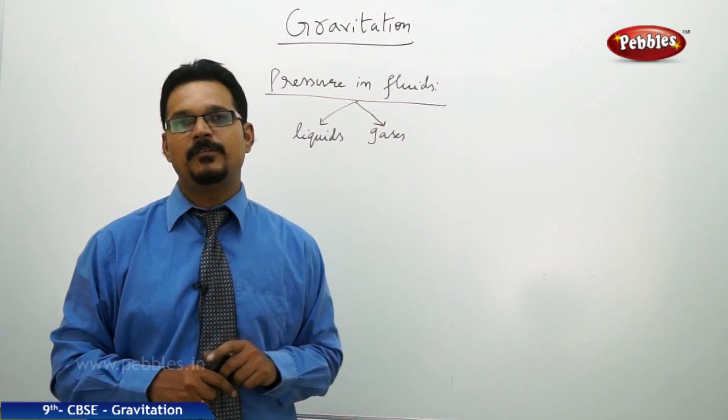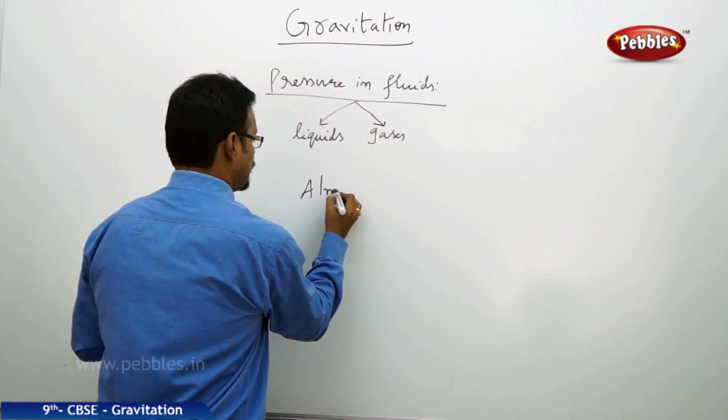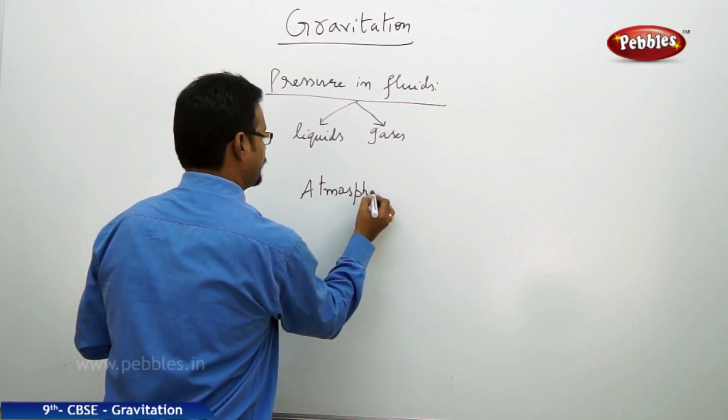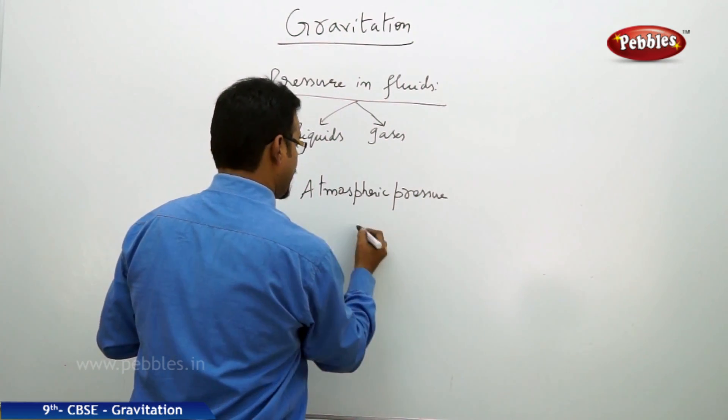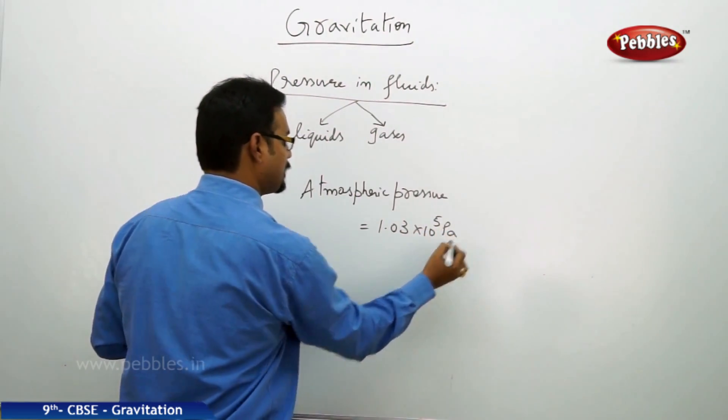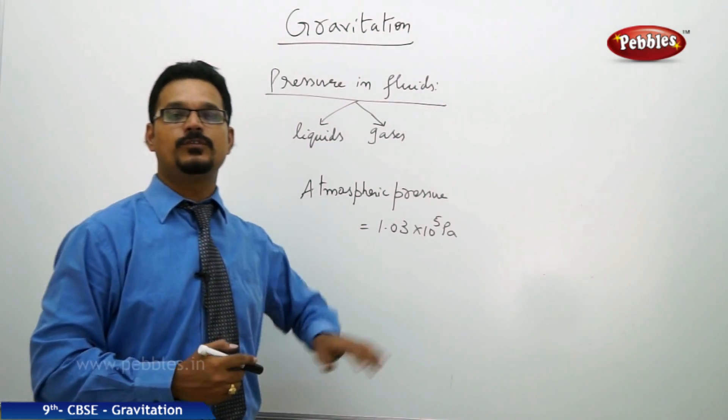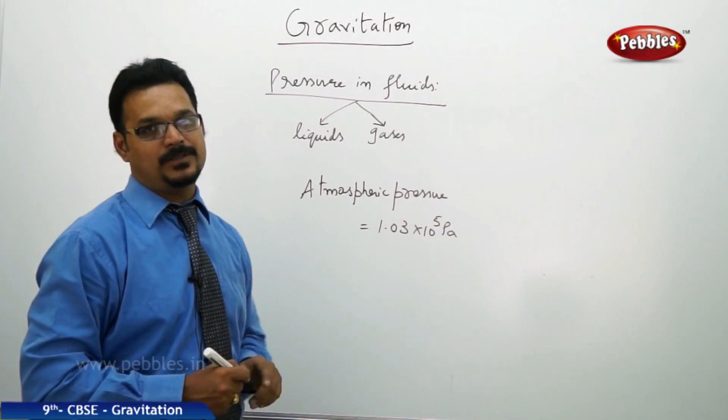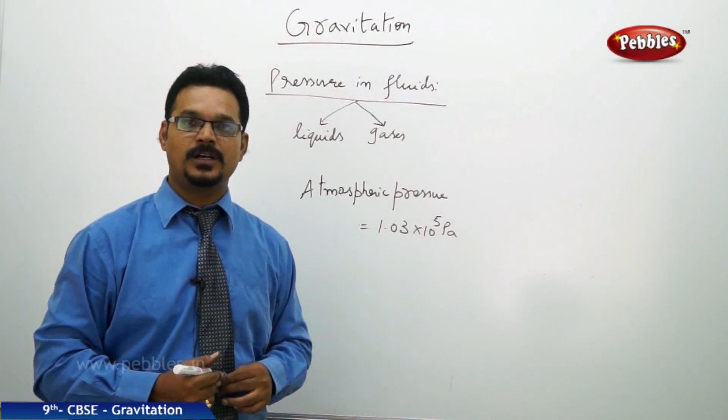Atmosphere is nothing but filled with air. Air is also high in pressure, and this pressure is called atmospheric pressure. Atmospheric pressure, and its value is given by 1.03 × 10^5 Pascals. This is the value of atmospheric pressure. Of course, we don't have much discussion in this chapter - in higher class we discuss more about atmospheric pressure and other pressures.